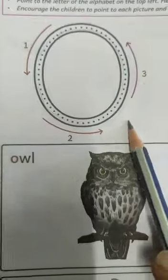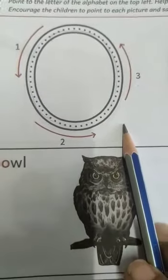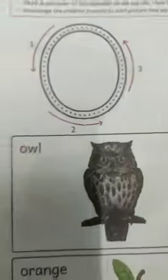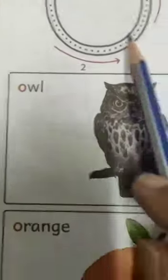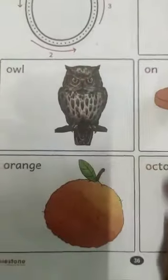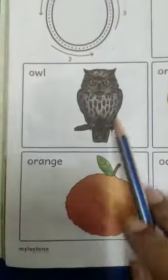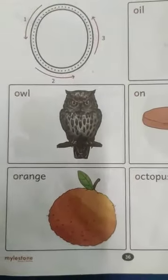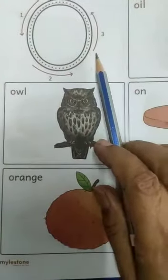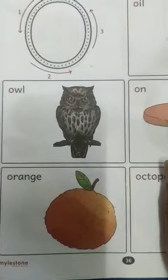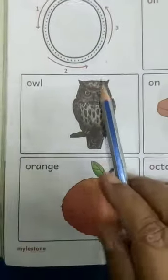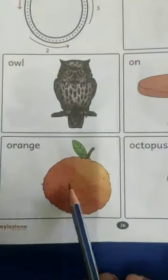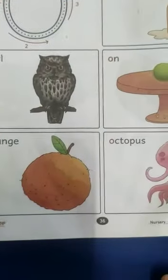This is letter O and the sound of letter O is O. O oil, O owl, O on, O orant, O octopus. Once again: O oil, O owl, O on, O orant, O octopus.